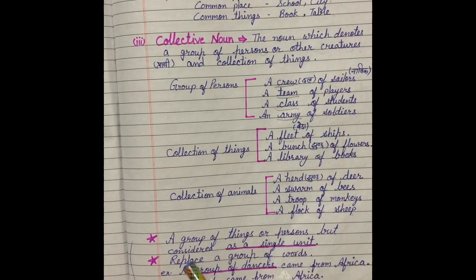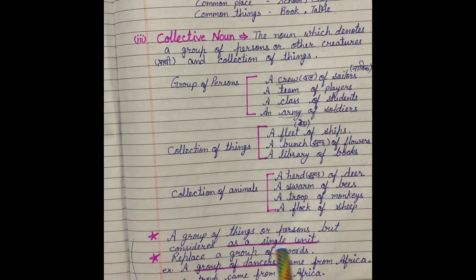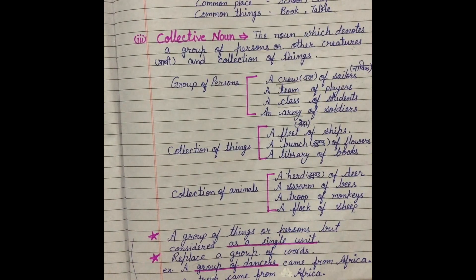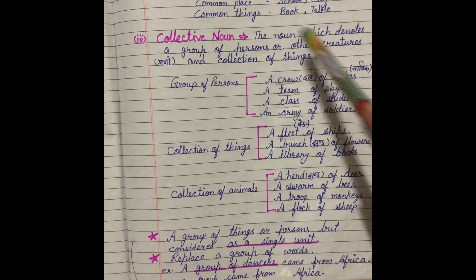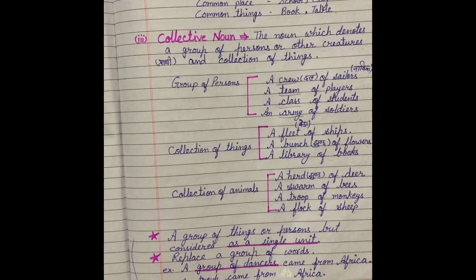Here are some important points. A group of things or persons, but considered as a single unit. Here we use many things and many persons in a group. Is group mein bahut sari persons or things hoti hain. But these are considered as a single unit. Lekin inhe singular mana jata hai. Inke saath jab hum verb ka use karte hain, singular verb ka use kiya jata hai. Collective noun replaces a group of words. Jo collective noun hoti hai hamari, ye group of words ko replace karti hai.